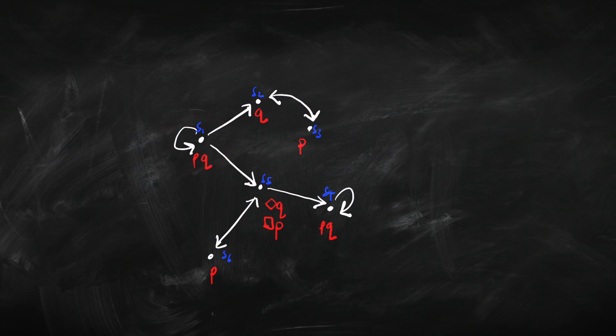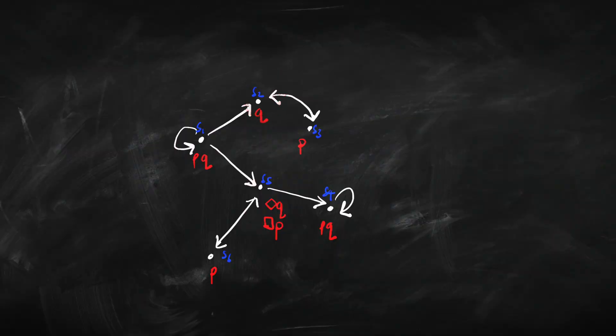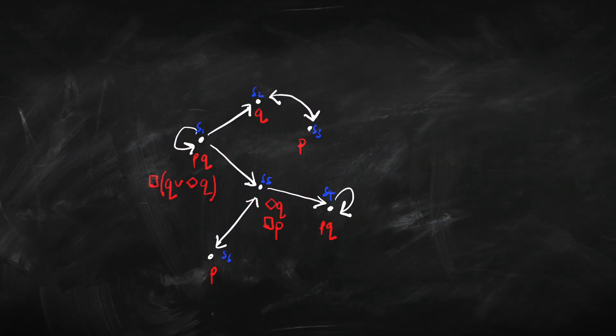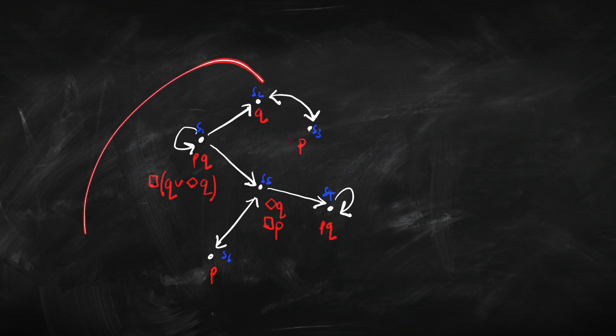What about state S1? From there I can get to itself via a self-loop, and to S2 and S5. Is there anything true at all of those? Q is true at S1 and S2, but not at S5. However, 'Q or diamond-Q' is true at all of them — because where Q is true, 'Q or diamond-Q' is true by propositional logic; and at S5, diamond-Q is true, so 'Q or diamond-Q' is true there too. So standing at S1, box-(Q or diamond-Q) holds. That's how we go through sentences bit by bit and work out whether they're true or false in a relational model — that's basically all we're doing in modal logic.